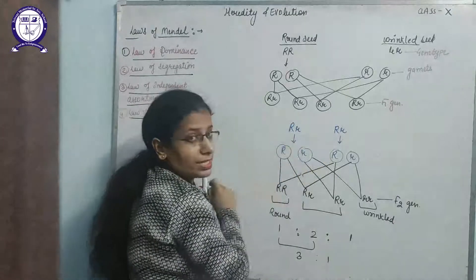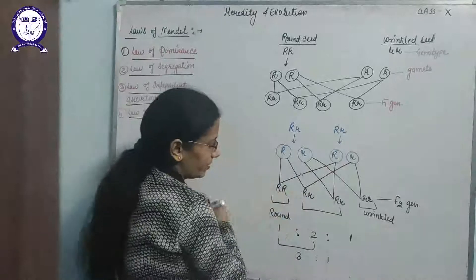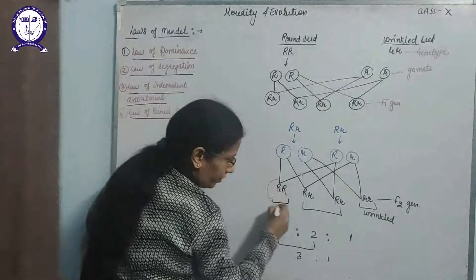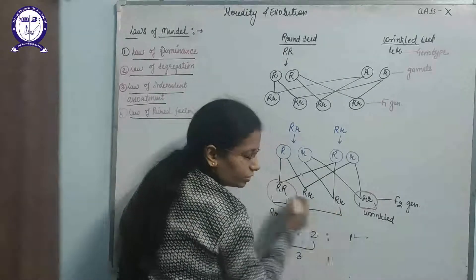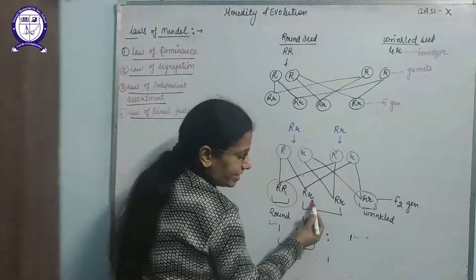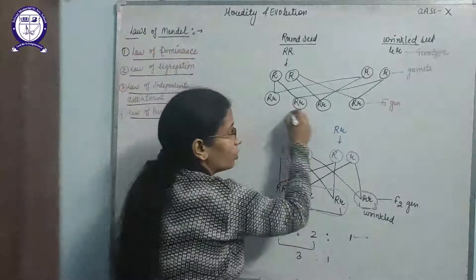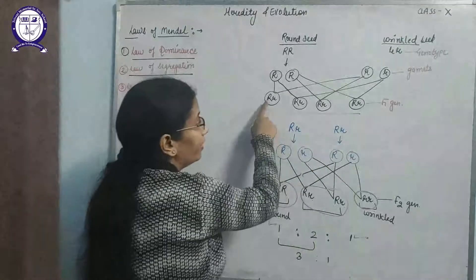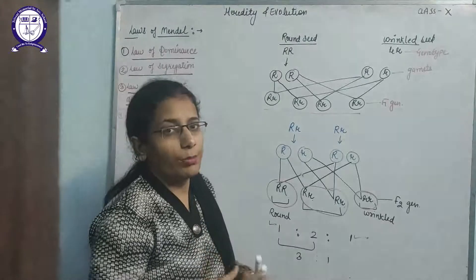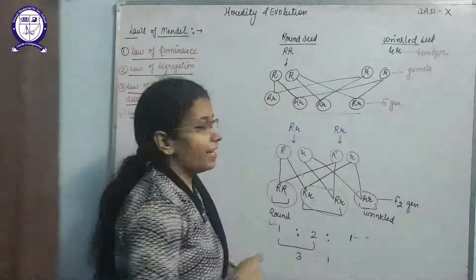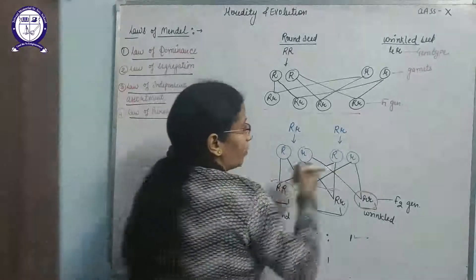So we need to find the F2 generation. We take one of the F1 generation plants and do selfing. These also make gametes and after crossing, the gametes give rise to: one round, one wrinkle, and two hybrids. Here you can see one capital R and one small r — capital R, small r. The law of dominance is applied here because small r will not express itself in the presence of capital R. Capital R is dominant and small r is recessive, so only the dominant allele will express itself.